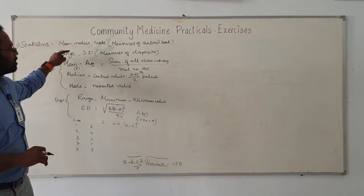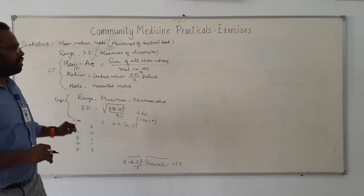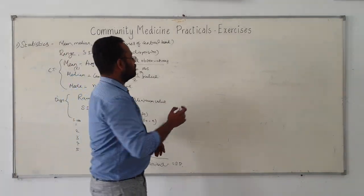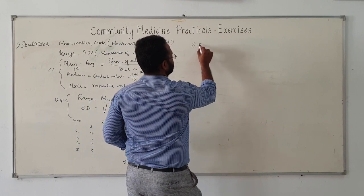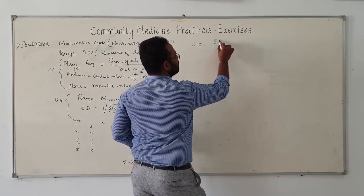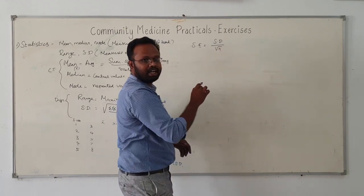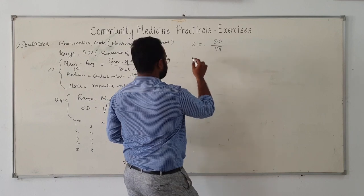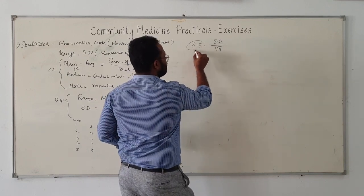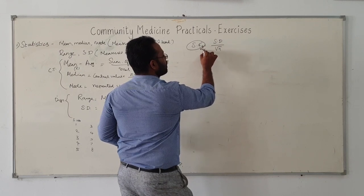Now we have seen measures of central tendency and measures of dispersion. From these you can calculate further derived statistics: standard error of mean, which is given by the formula SD divided by √n, where SD is standard deviation and n is the sample size. This is the standard error of mean.